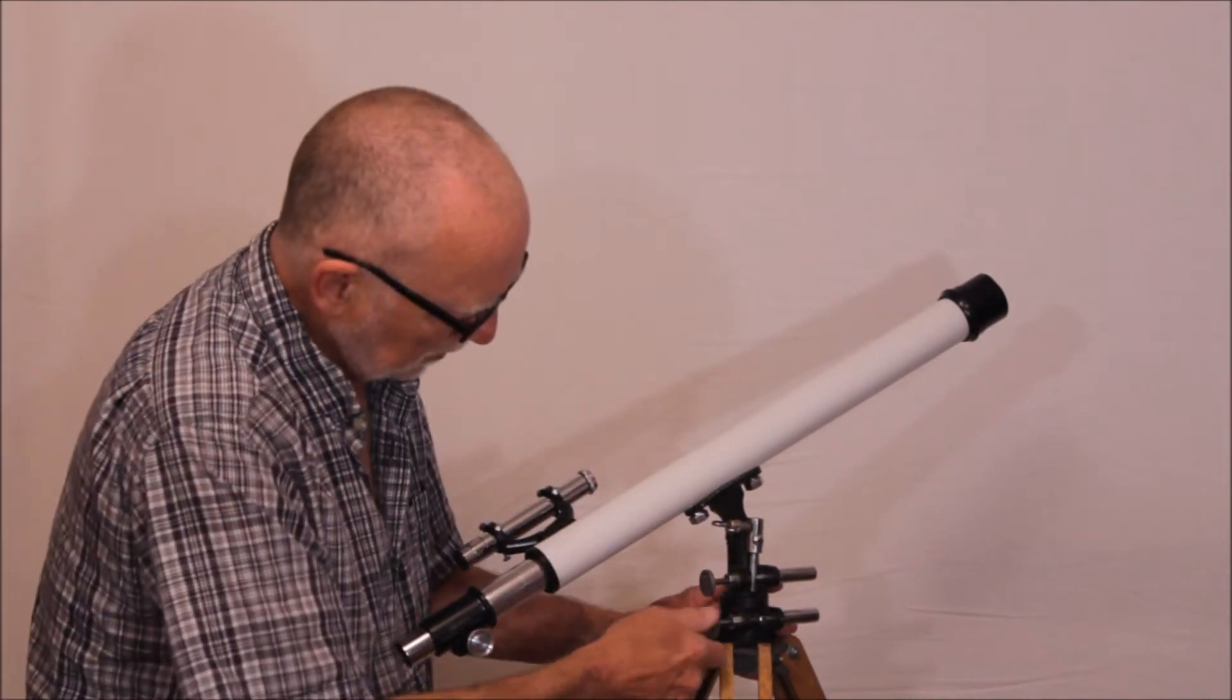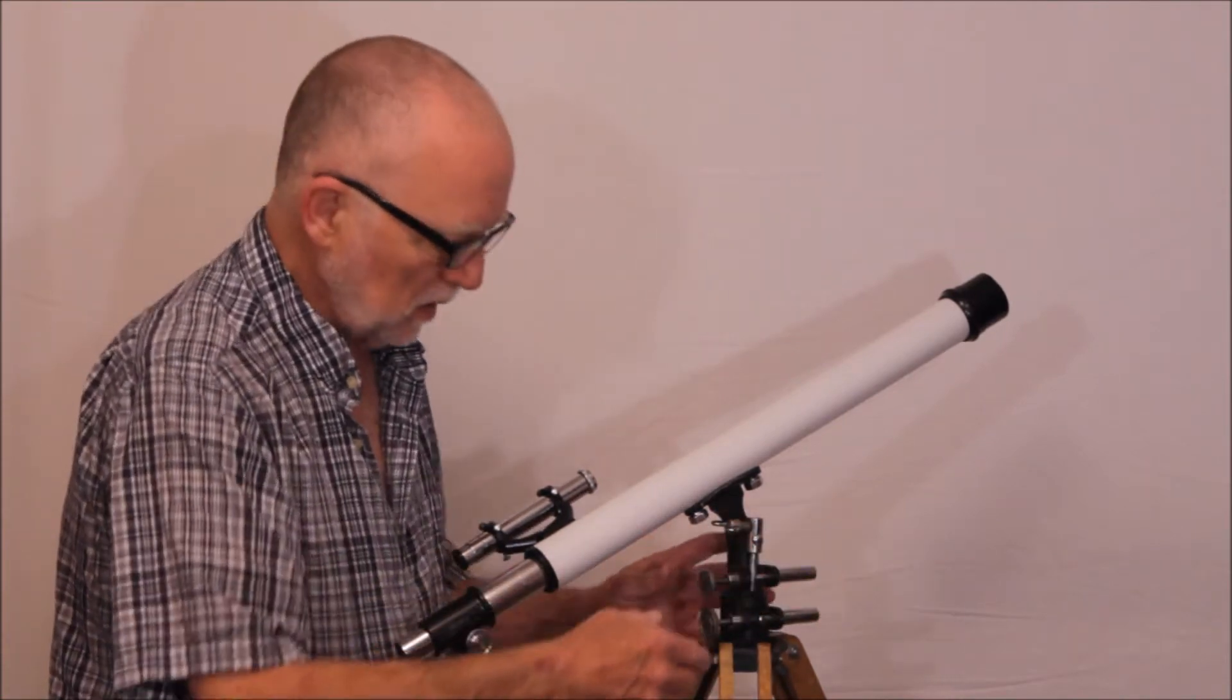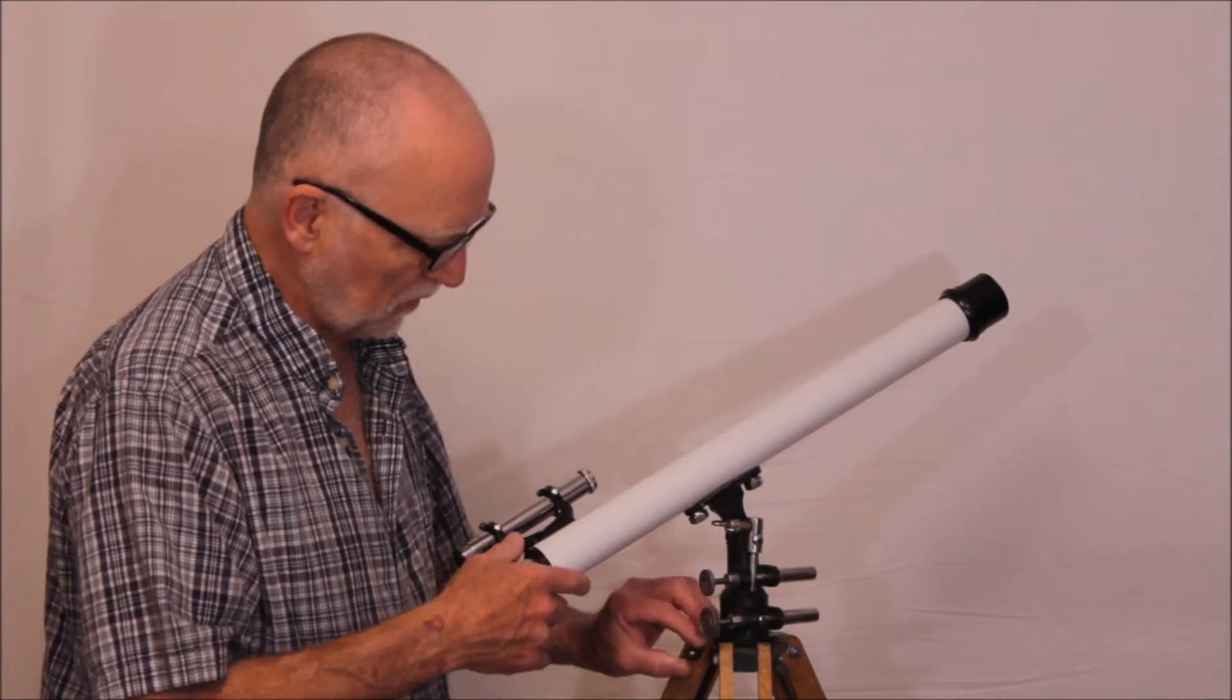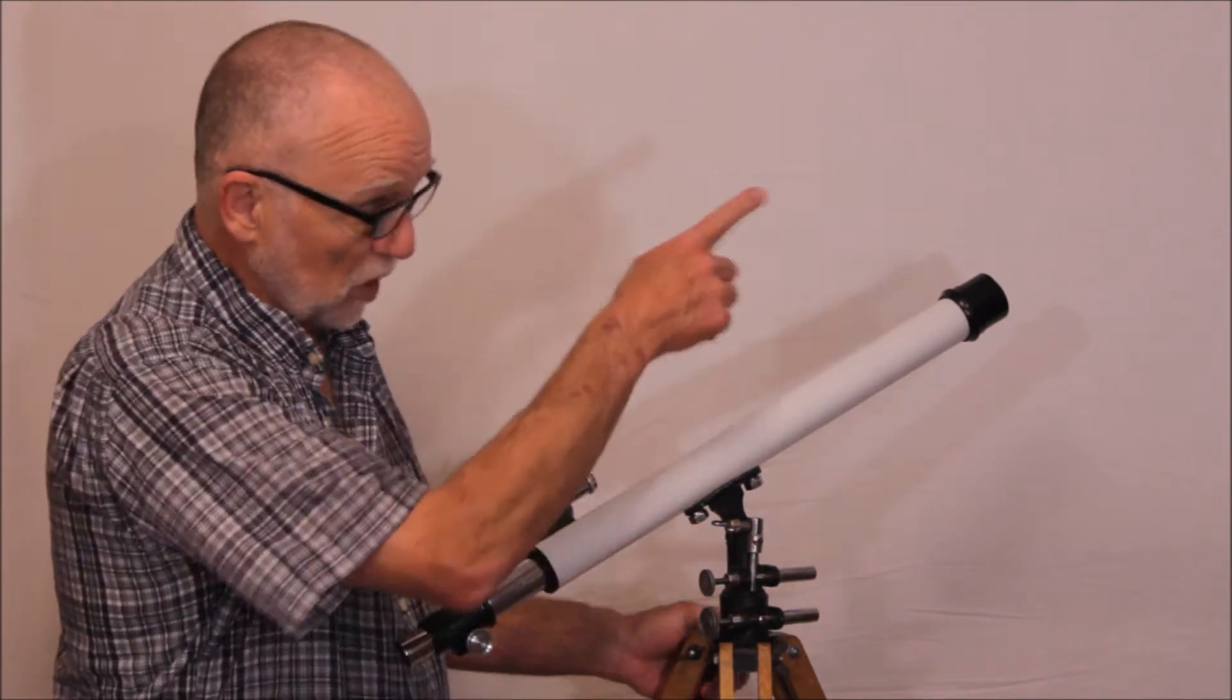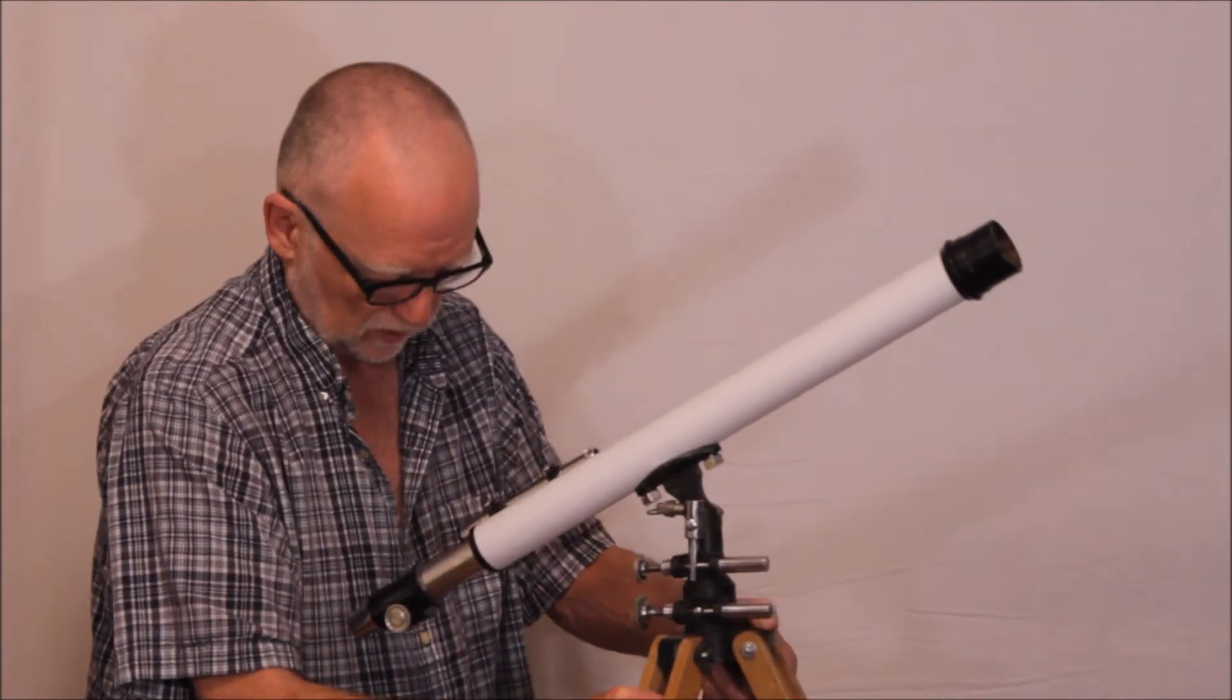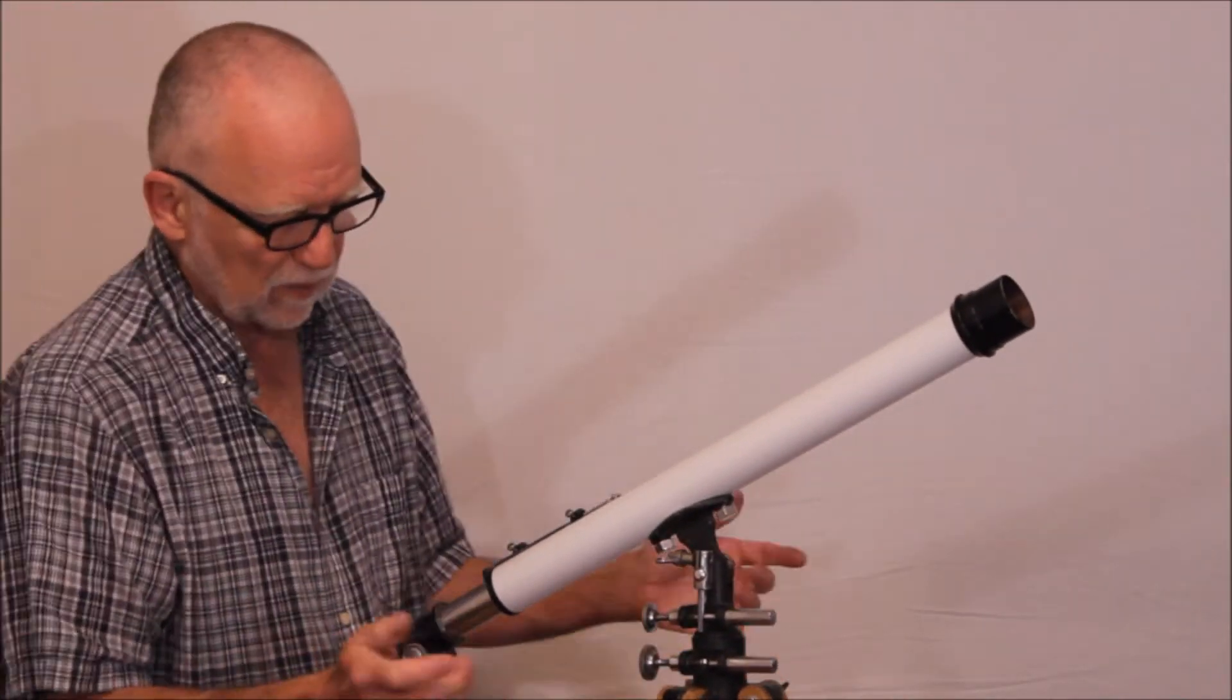you don't have any way to make a coarse adjustment. So you're kind of stuck with what you've got. If you want to make a coarse adjustment, suppose something is over there in the sky. You have to pick the whole telescope up, turn it around, and aim it over there.